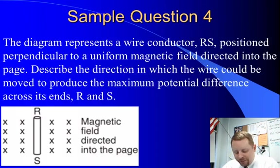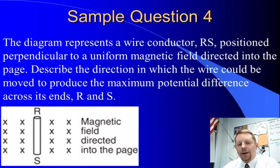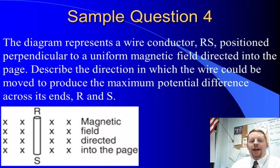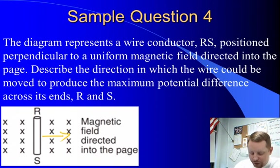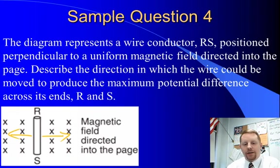Let's take a look at one more. The diagram below represents a wire conductor RS positioned perpendicular to a uniform magnetic field directed into the page. Describe the direction in which the wire could be moved to produce the maximum potential difference across its ends R and S. To create an induced potential difference, the conductor has to move across the magnetic field lines. So the wire could be moved either to the right or to the left to give the maximum potential difference.